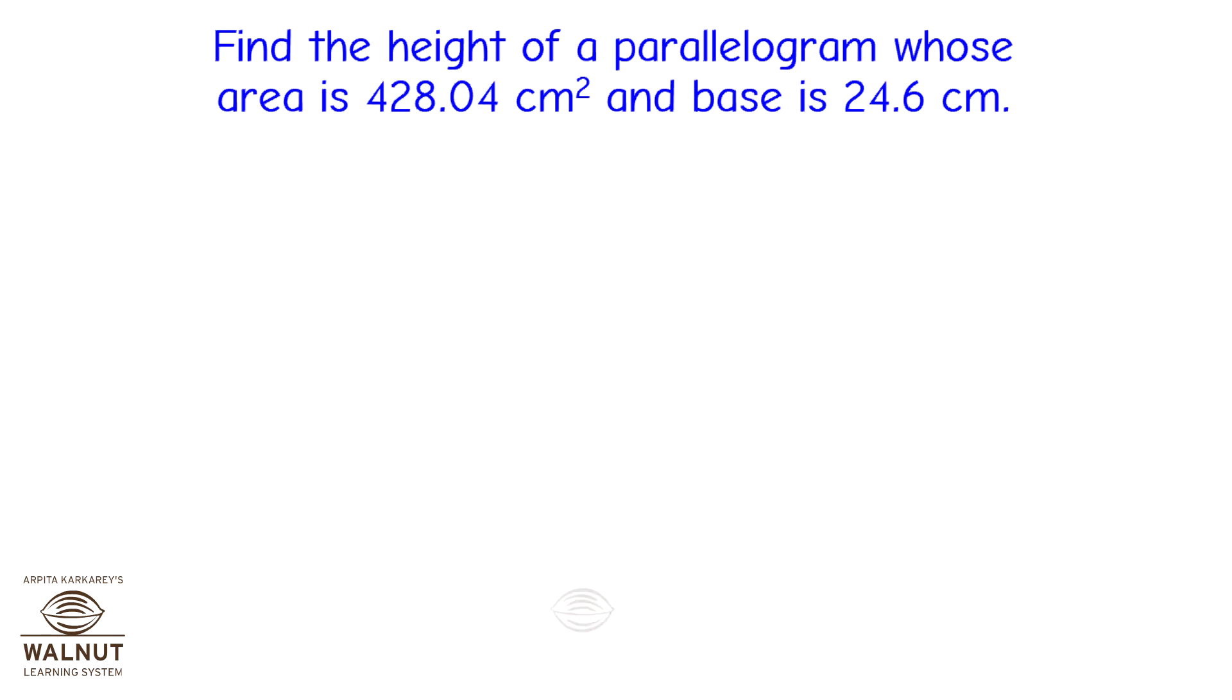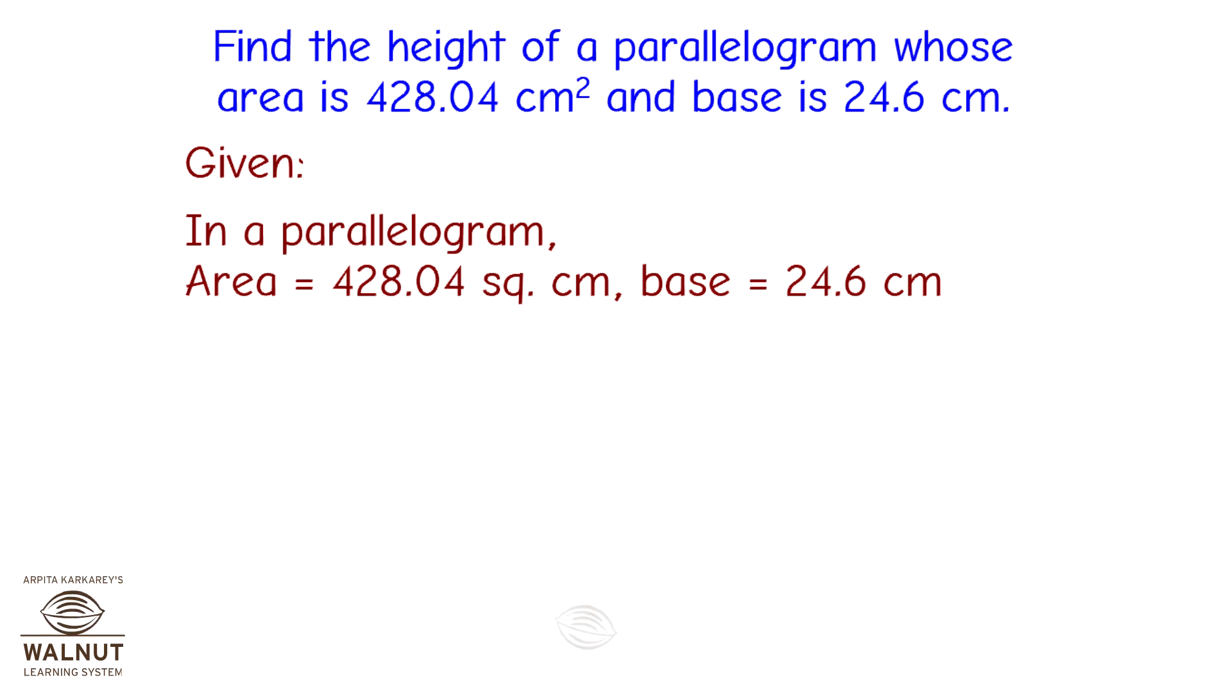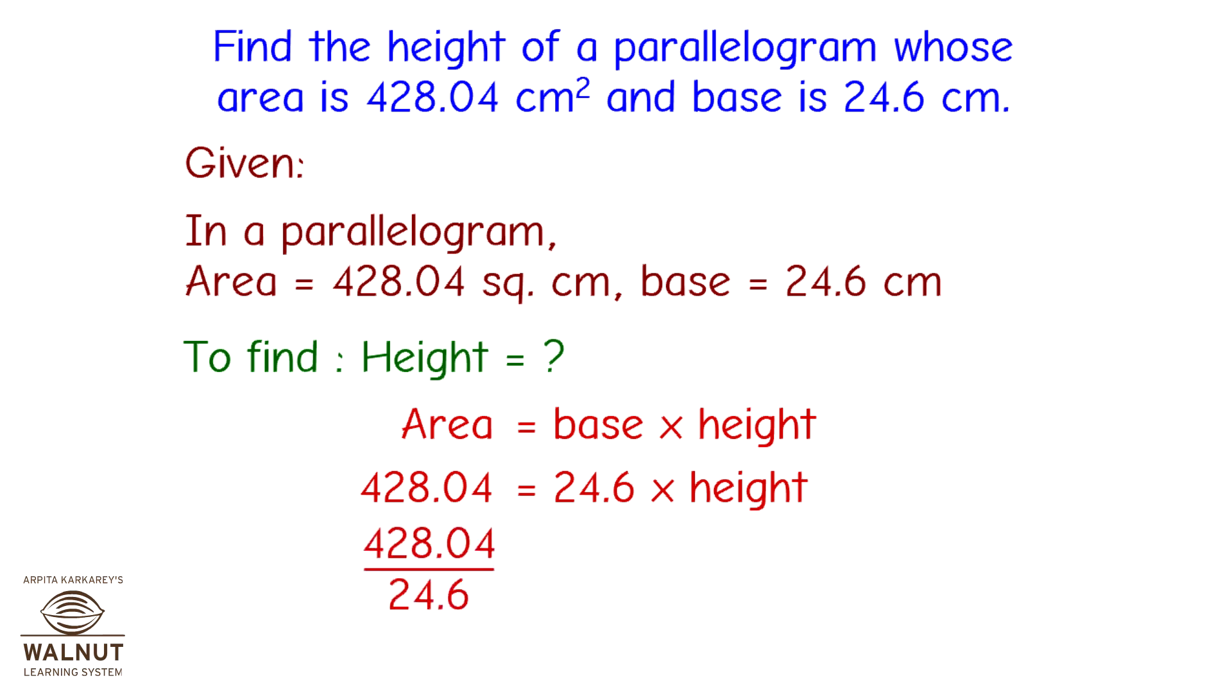Let us now solve some word problems. Read the problem carefully. Find the height of a parallelogram whose area is 428.04 cm² and the base is 24.6 cm. What is given to us? In a parallelogram, area is equal to 428.04 cm², base is equal to 24.6 cm. What is to be found out? The height of a parallelogram. Let us write the formula first. Area of a parallelogram is equal to base into height. Let us put in the values. 428.04 is equal to 24.6 into height. We move 24.6 to the left side and we get 428.04 divided by 24.6 is equal to height. Therefore height is equal to 17.4. That gives us the answer. The height of a parallelogram is 17.4 cm.